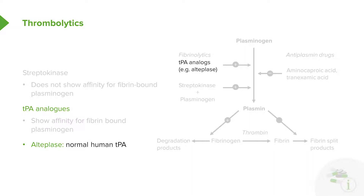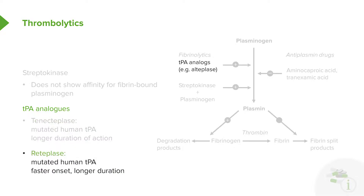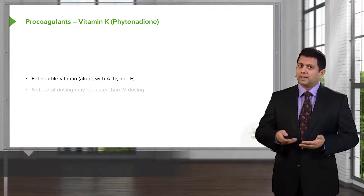There are TPA analogs which are replacing streptokinase, and they show affinity for fibrin-bound plasminogen. Alteplase is the prototypical drug with the TPA analogs. Tenecteplase is a mutated human TPA that has a longer duration of action and has now become probably the most commonly used thrombolytic. Reteplase is a mutated human TPA as well, which has a faster onset and longer duration, and may end up replacing the other drugs.